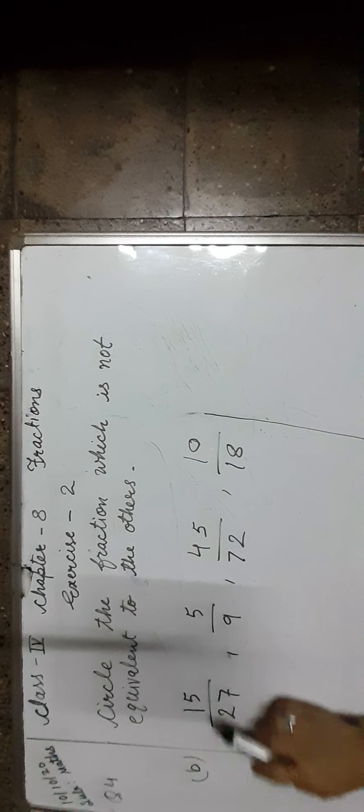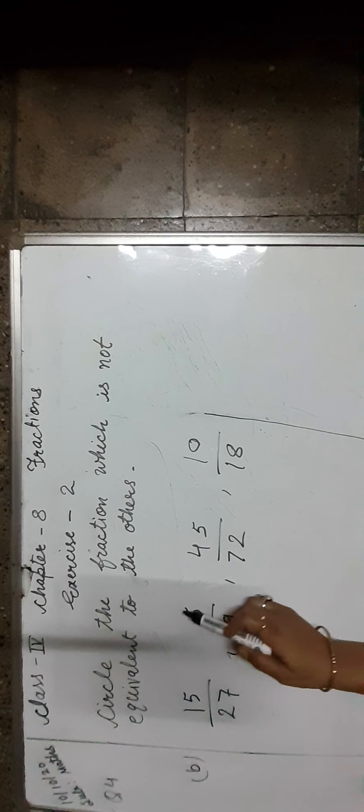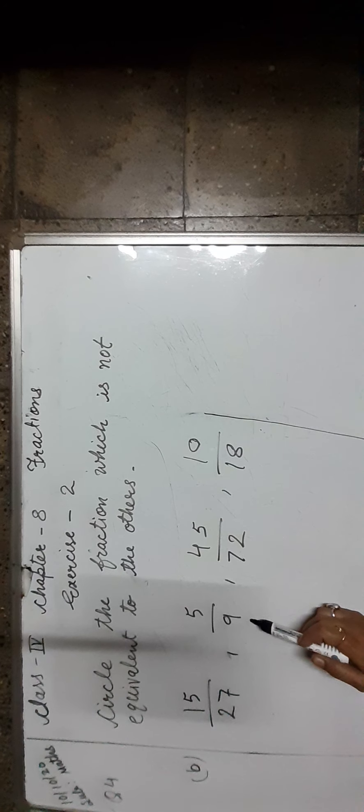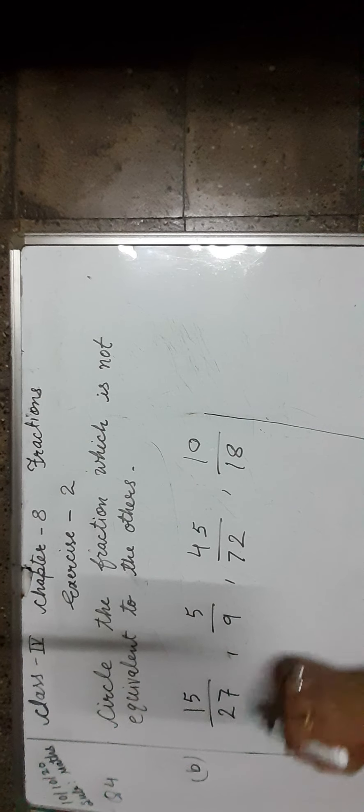Let us do question number B: 15 upon 27, 5 upon 9, 45 upon 72, and 10 upon 18. Here, as you can see, 5 upon 9 is already in lowest form, so it cannot be divided further. First, change the fraction 15 upon 27 to lowest form. Check the divisibility of 15 and 27 by the same number — that is 3. If we cancel by 3: 3 fives are 15, 3 nines are 27. We will get 5 upon 9, which is equal to 5 upon 9. So, 15 upon 27 is an equivalent fraction.